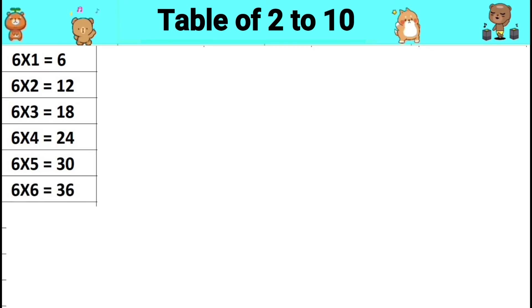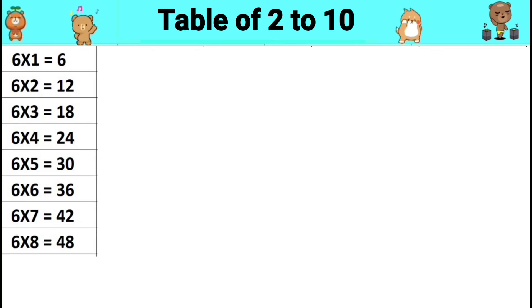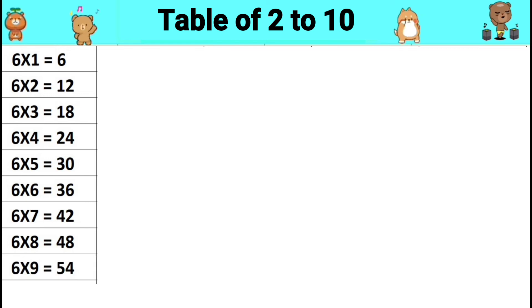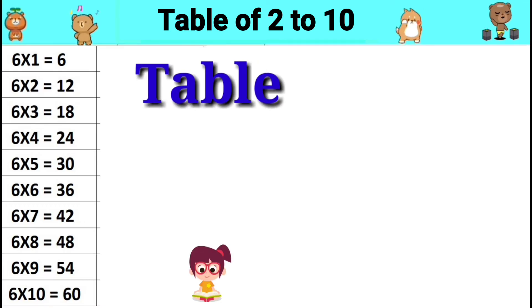Six sixes are thirty-six. Six sevens are forty-two. Six eights are forty-eight. Six nines are fifty-four. Six tens are sixty.